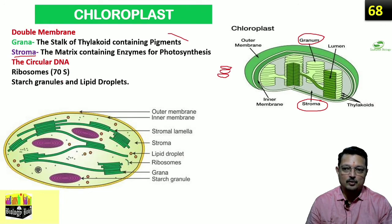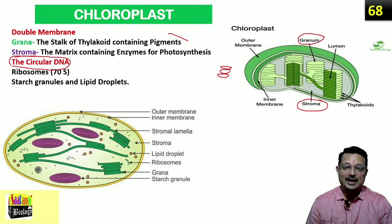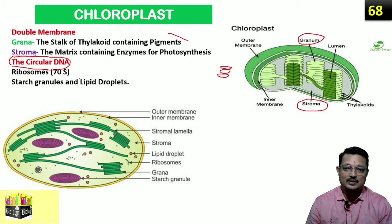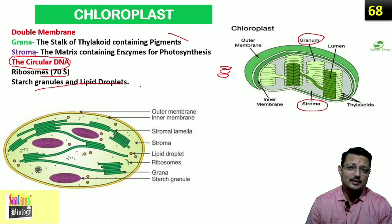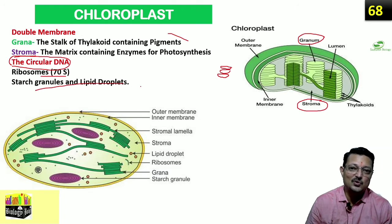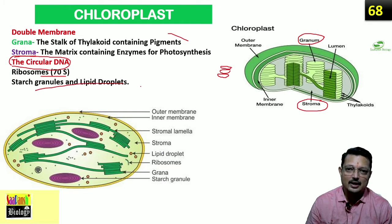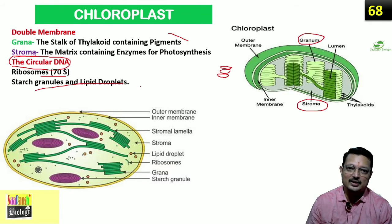You can also find circular DNA in the chloroplast. What does that indicate? It again indicates endosymbiosis. Chloroplast is also a semi-autonomous organelle. Ribosomes present are of the 70S type. Starch granules and lipid droplets are also seen. This means chloroplast also represents the structure of a prokaryotic cell, and this prokaryotic cell may have been incorporated inside a eukaryotic cell — a good example of endosymbiosis.